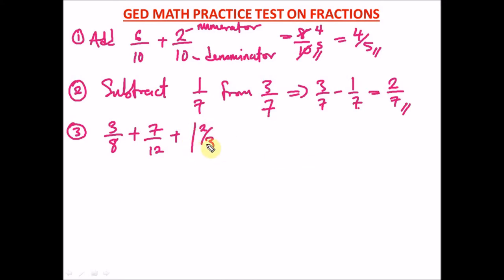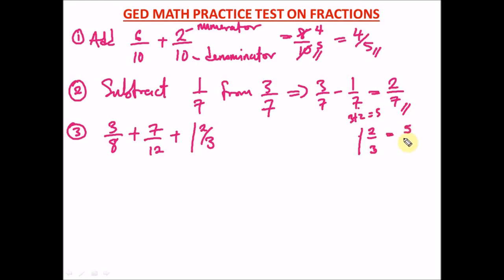Let me refresh your memory on converting mixed fractions. To convert 1 and 2 over 3 to an improper fraction: multiply the denominator by the whole number — 3 times 1 is 3 — then add the numerator: 3 plus 2 equals 5. So it becomes 5 over 3, keeping the same denominator.